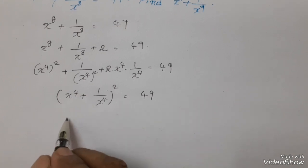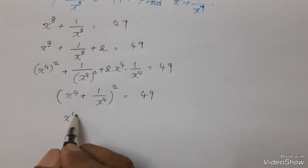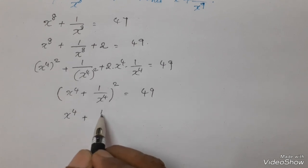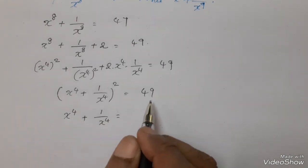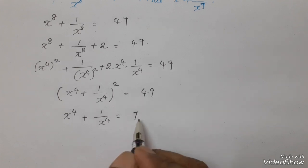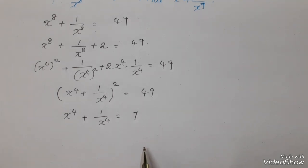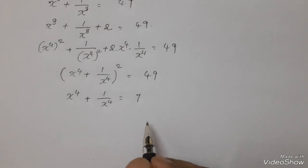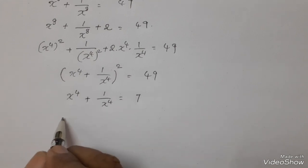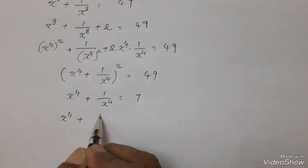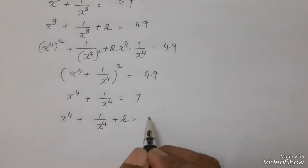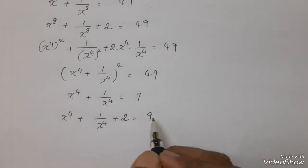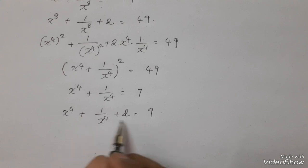Taking square root on both sides, we get x power 4 plus 1 by x power 4 equal to square root of 49, which is 7. Now again add 2 on both sides: x power 4 plus 1 by x power 4 plus 2 equals 7 plus 2, giving 9.